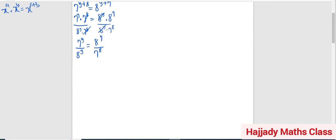And also, using the law of indices, I can bring out this power. So here I'm going to have 7 raised over 8, everything raised to the power y, equals 8 raised to the power 7 over 7 raised to the power 8.